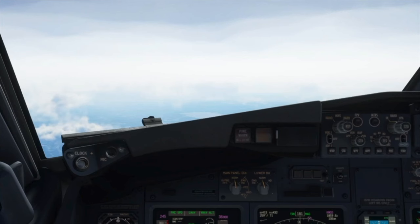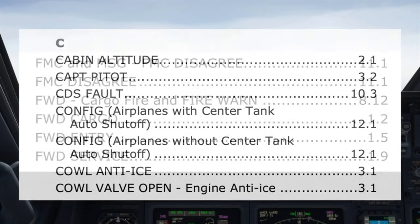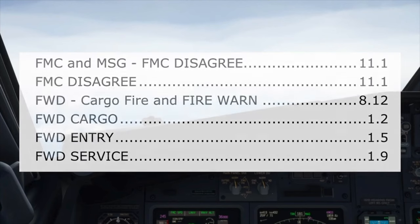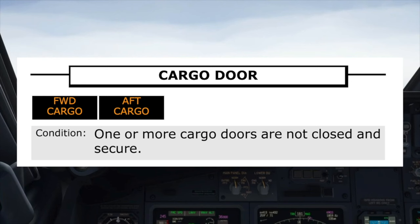After checking the QRC if applicable, the pilot monitoring finds the procedure in the Quick Reference Handbook (QRH). The procedure does not appear under 'C' for cargo door — it is listed under 'F,' using exactly the terminology of the light: 'forward cargo.' The pilot monitoring reads the procedure title as well as the condition it's for.